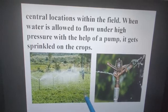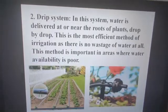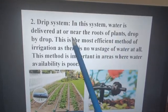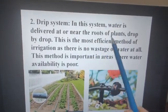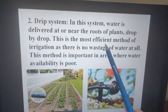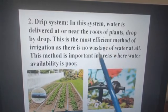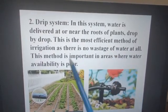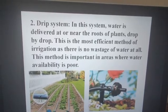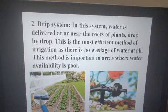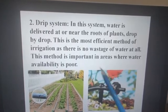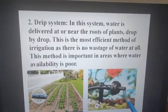The drip system: in this system, water is released at or near the roots of the plants, drop by drop. This is the most efficient method of irrigation as there is no wastage of water at all. This method is important in areas where water availability is poor. You can see these are the pipes — this is a zoom of the pipe showing how water comes drop by drop and goes towards the roots.